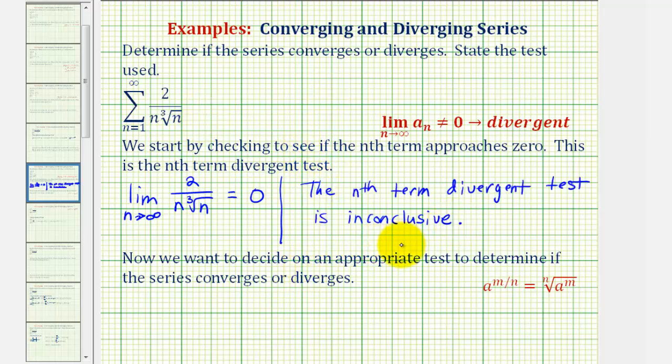To recognize which test to apply, let's rewrite the denominator using rational exponents. If we consider a sub n just for a moment, it would be 2 divided by n times the cube root of n, which is the same as the cube root of n to the first. Using our rational exponent rule here, this would be n to the one-third power.